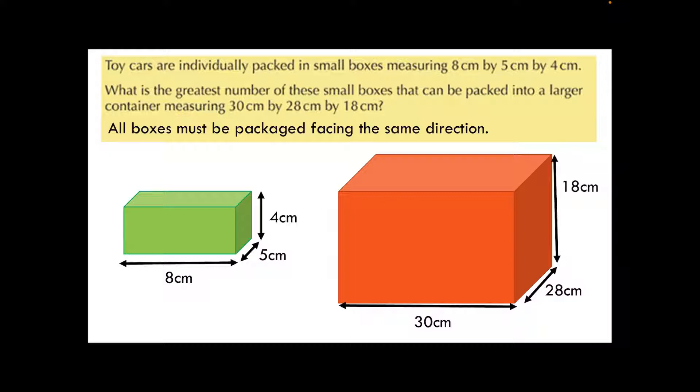Today then we are going to have a look at example one. So toy cars are individually packed in small boxes, that's our green box measuring 8 by 5 by 4 centimeters. And we want to know the greatest number of these small boxes that can be packed into the larger red box that measures 30 by 28 by 18 centimeters. What's important here is we have been told all boxes must be packaged facing the same direction. So it means that we can't have some lying this way and some lying that way. They've all got to be the same orientation.